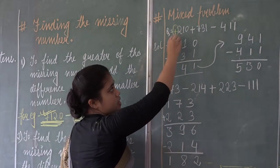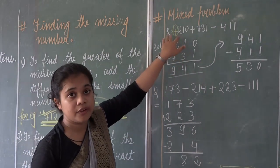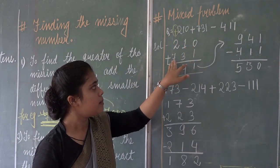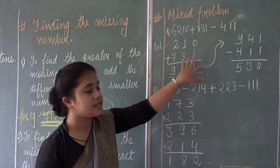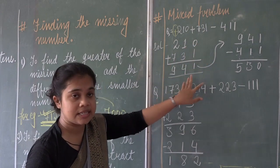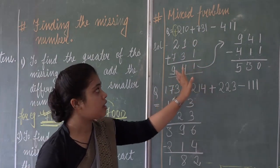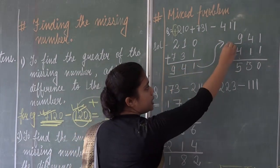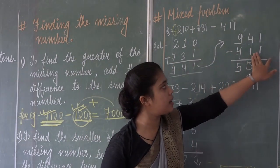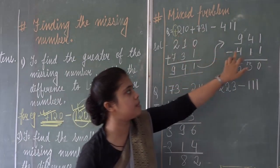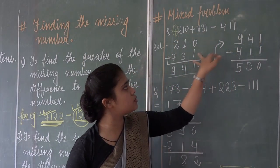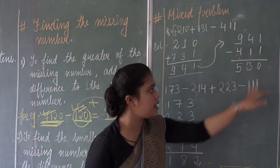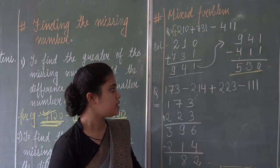If there is no sign before the first number, it means it is plus. So 210 plus 731 gives the result 941, and then you subtract 411. You will subtract 411 from the sum of these two numbers. The sum is 941, and when we subtract 411 from it, the result is 530.